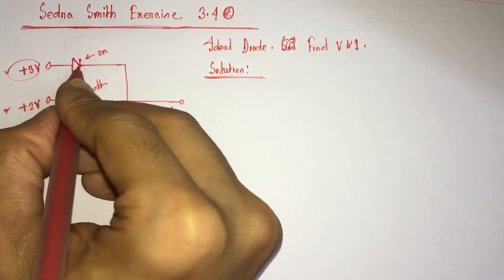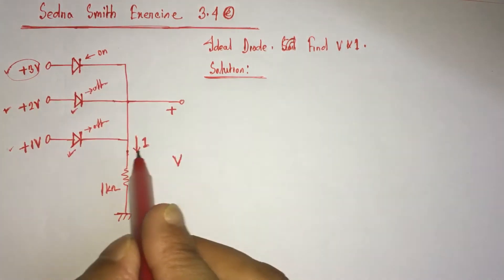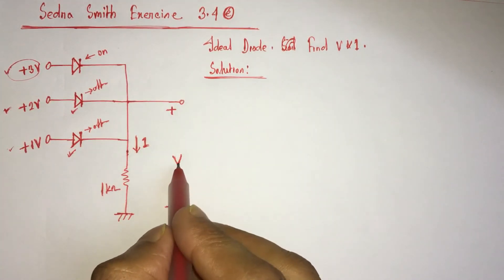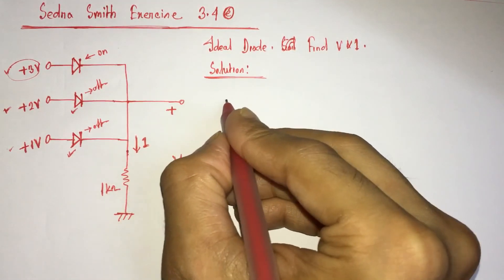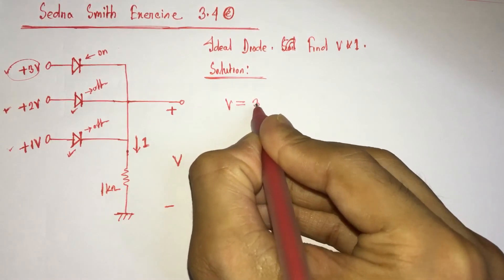This is an ideal diode, there is no drop, so output V will be equal to this 3 volt. So we find V is equal to 3 volt.